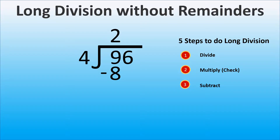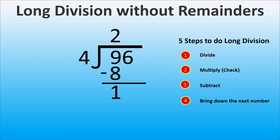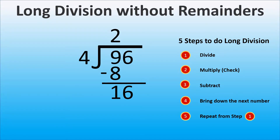Step 3 is subtraction. We subtract 8 from 9. That gives us 1, and we can move to the next step. Step 4 is to bring down the number in the next place value. It is 6 in our example. That gives us 16, and we are moving to the next step.